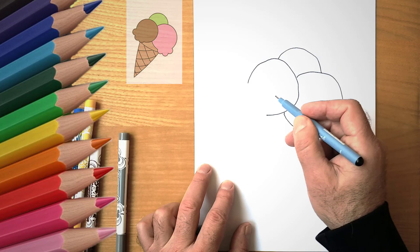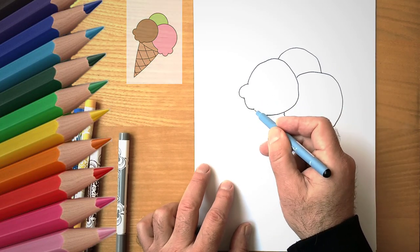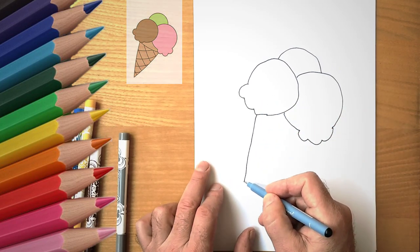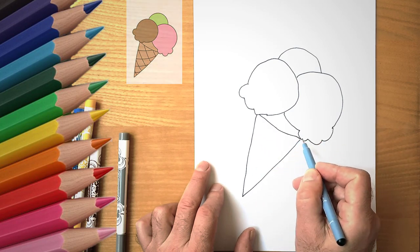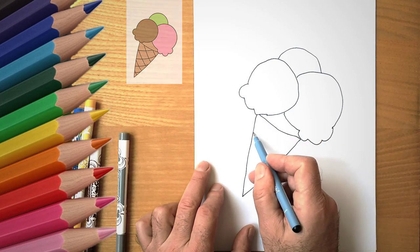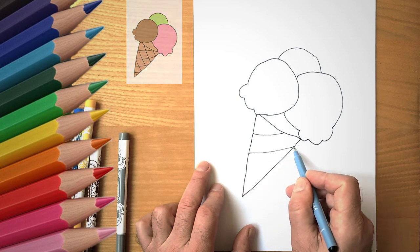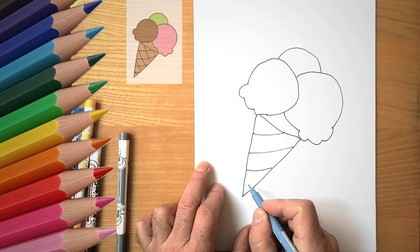This will be the first ice cream ball. Draw another circle near the first circle. It is partially visible. This is a second ice cream ball. Now let's draw a third circle. This will be the third ice cream ball.